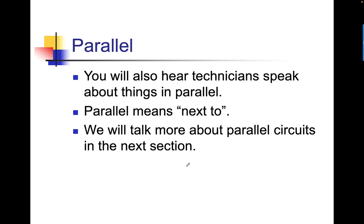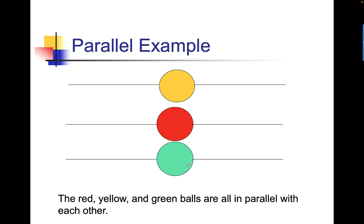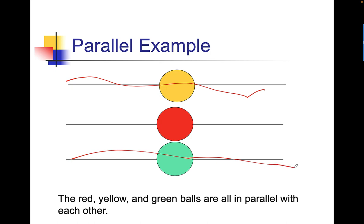Parallel means next to. Again, we're going to talk more about parallel circuits, but in order to understand meters, we have to identify what a parallel circuit is. The red, the yellow, and the green balls are all in parallel with each other. They're next to each other. I can send an electrical current through the yellow without going into the red or the green. Same with the green — I can send an electrical current through here without affecting the yellow or the red. They're in parallel.